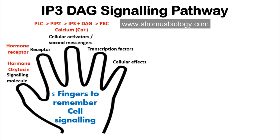IP3 takes the route of releasing calcium ions stored in the endoplasmic reticulum out into the cytosol. On the other hand, DAG activates protein kinase C, which then activates other proteins inside the cell by phosphorylating them. This is the sequence of cellular activation in the IP3/DAG pathway.